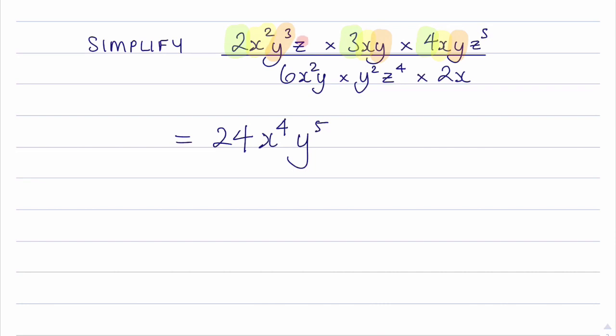And finally the z terms. I've got 1 here and 5 here. So that gives me z to the power of 6. So that's the numerator dealt with.